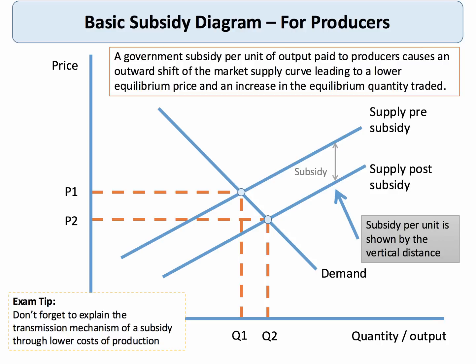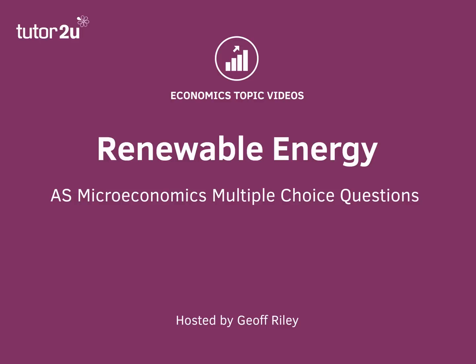The key thing in the exam, if you get asked to explain this, is to explain the transmission mechanism of a subsidy. The subsidy lowers the cost of production and therefore allows the firm to reduce their price from P1 to P2. The firm would then sell at P2, but receive the subsidy payment plus P2, which makes it more financially viable for the company. There's a multiple choice question on renewable energy and government subsidies.